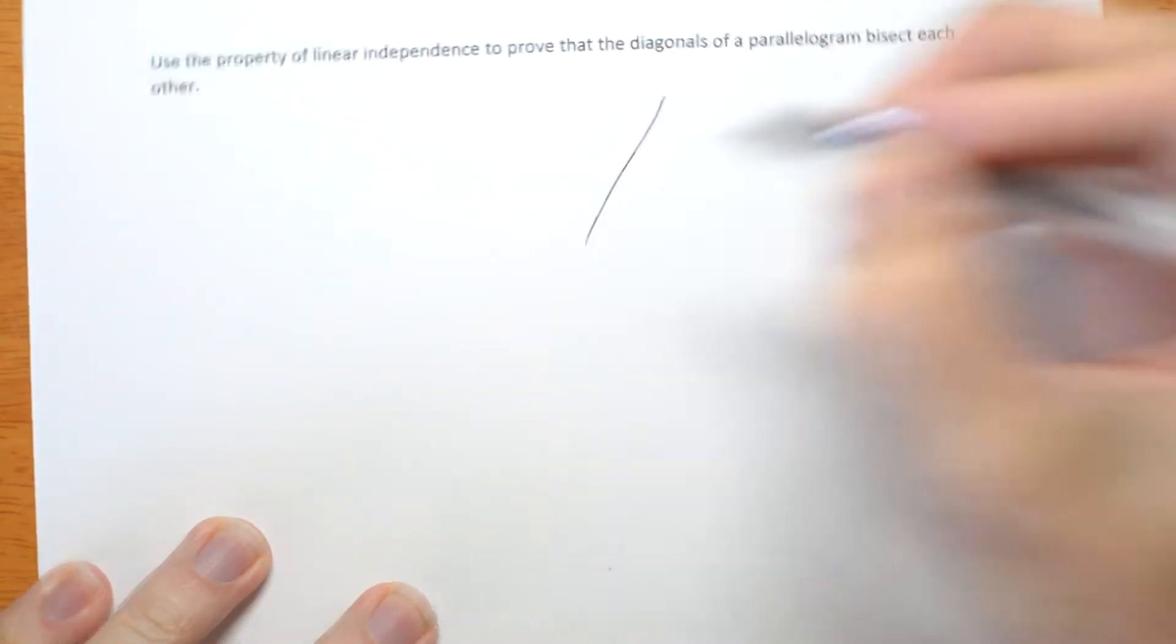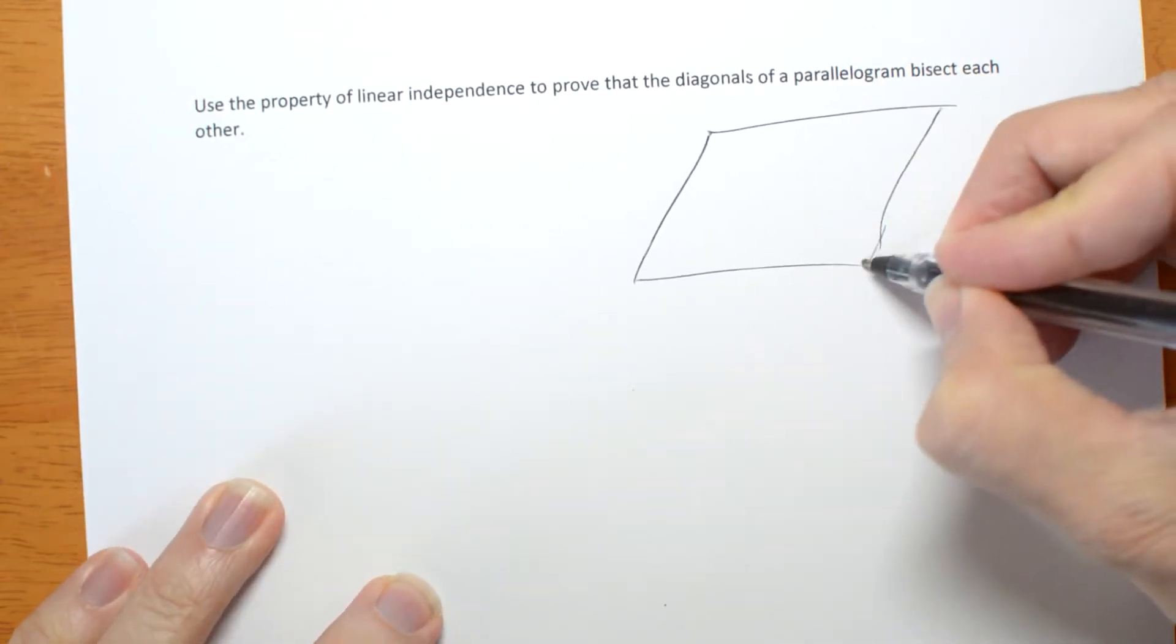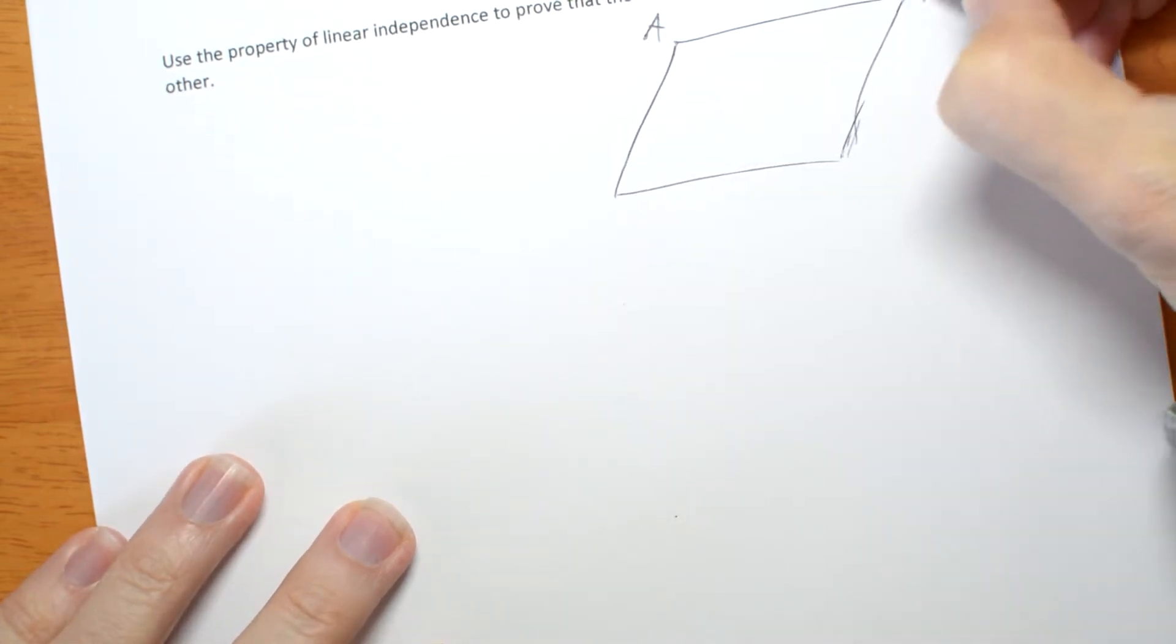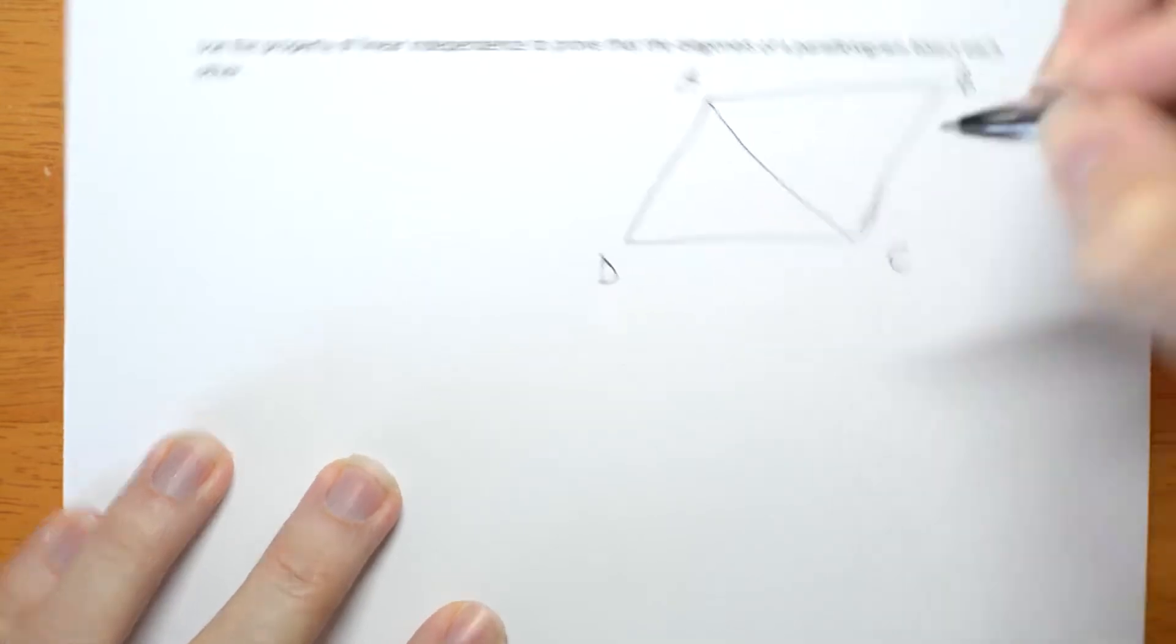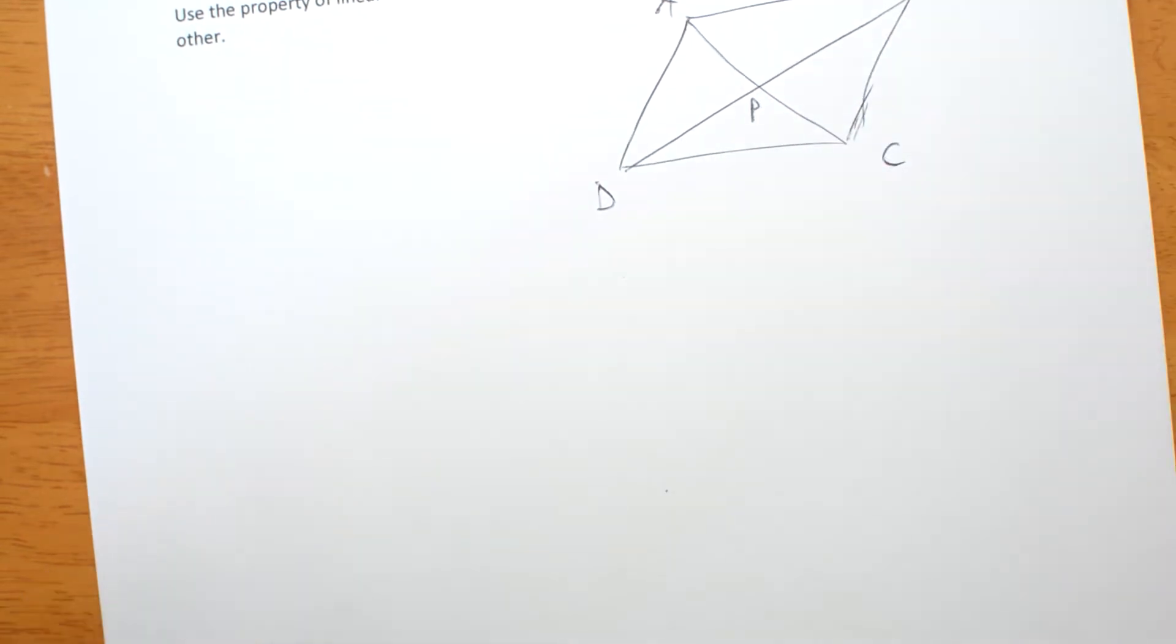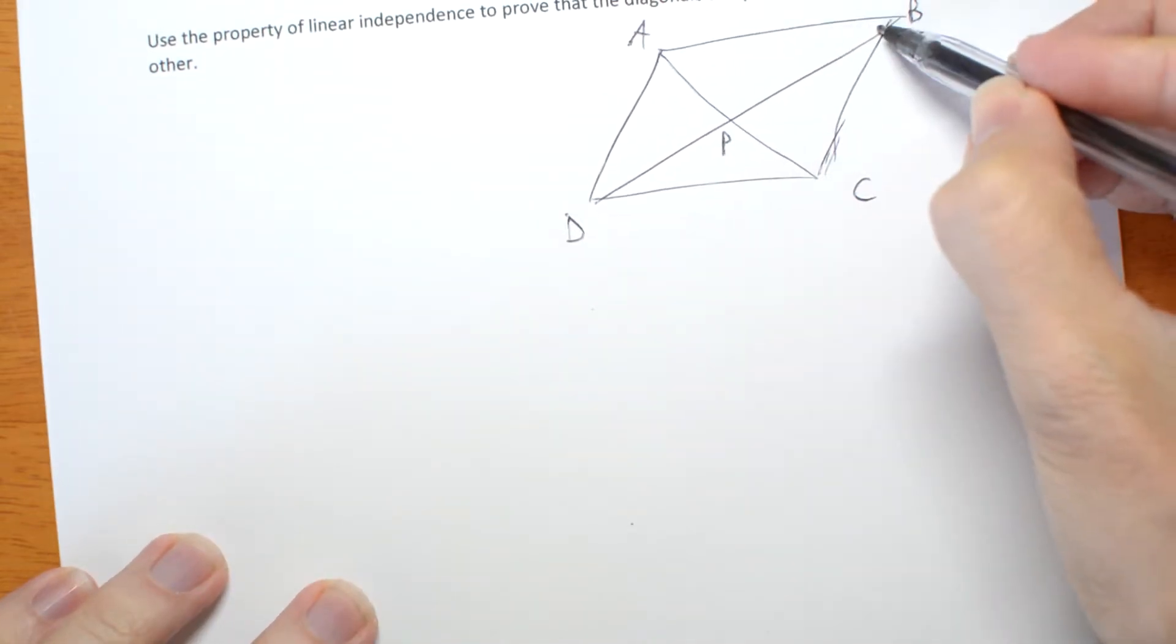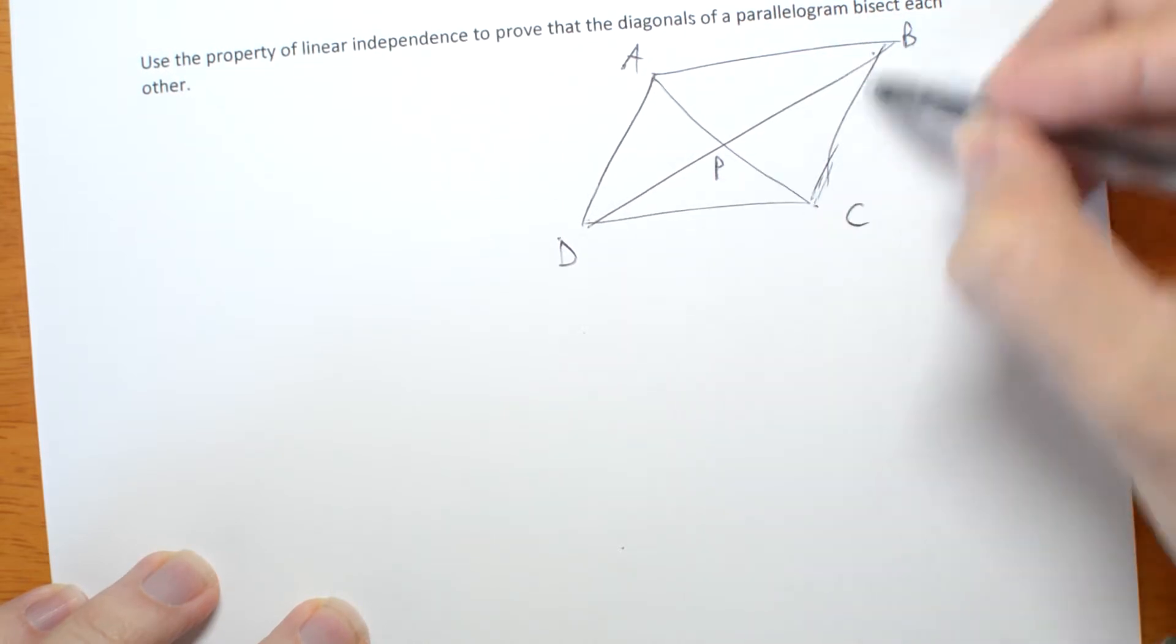So let's start by drawing a parallelogram. Wasn't a very good parallelogram was it? A, B, C, D. Let's draw in the diagonals. The diagonals meet at a point P. Now it is a parallelogram despite how I've drawn it. So AB is the same as DC and DA is the same as CB.